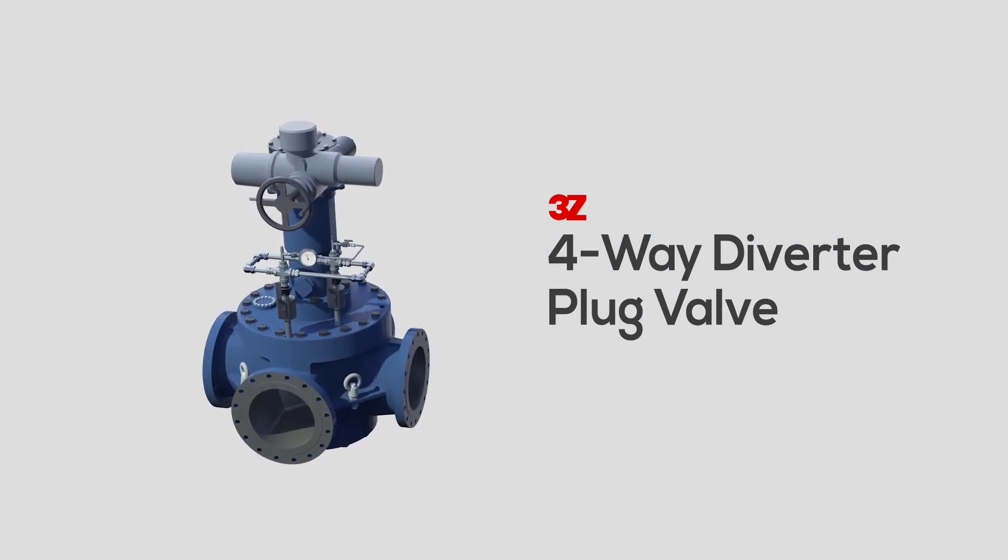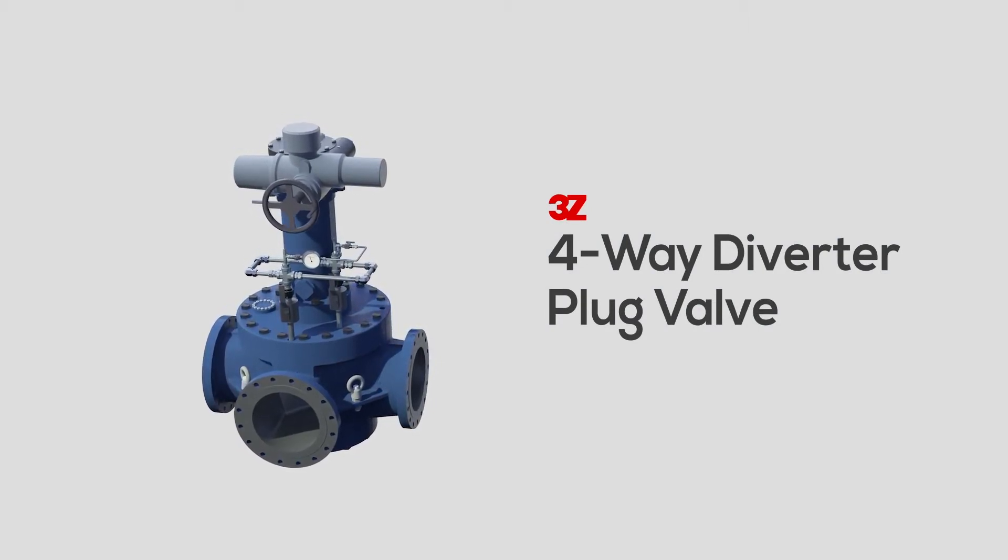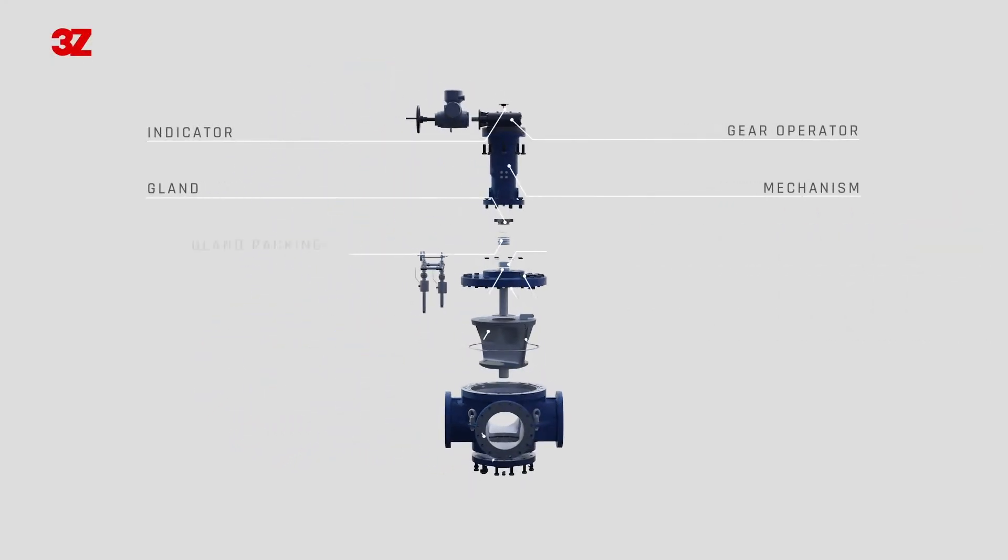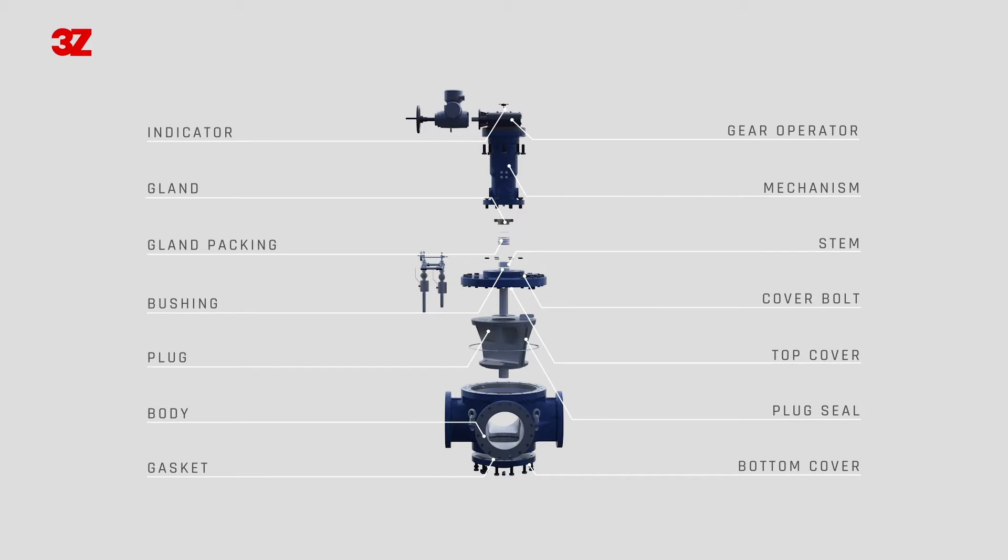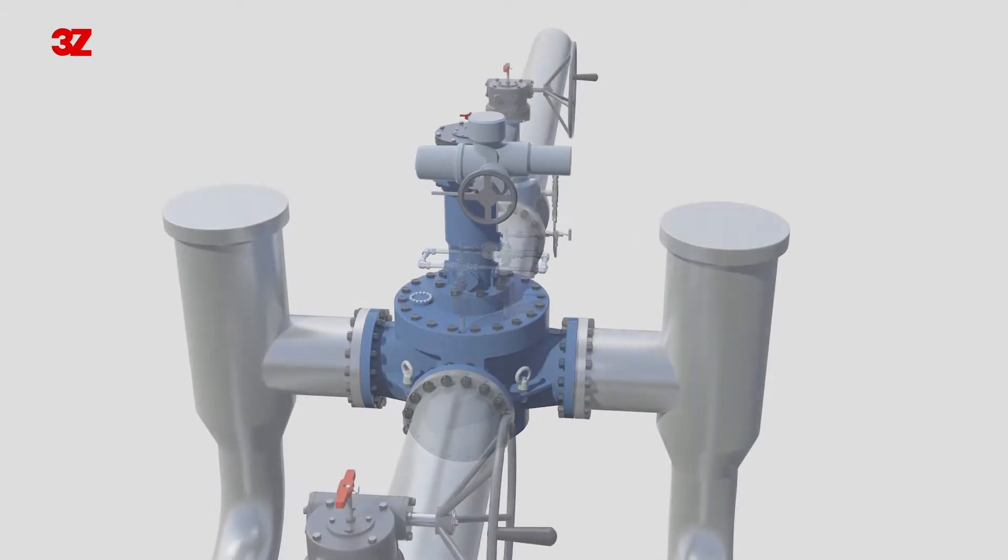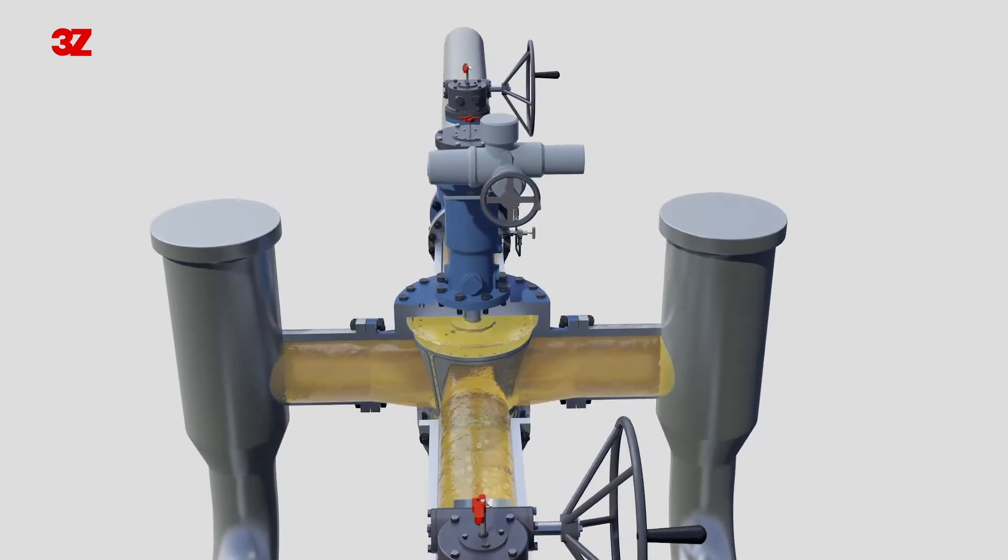The 3Z's 4-way diverter plug valve is designed to change quickly the direction of fluid in the meter proving system. The 4-way diverter plug valve operates at high speed in a short period around 10 seconds, and it requires perfect durability due to frequent operating compared with normal valves.